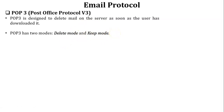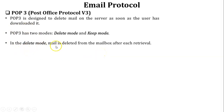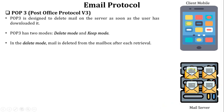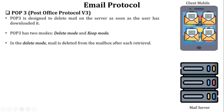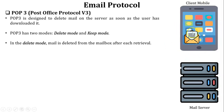In delete mode, mail is deleted from the mailbox after each retrieval. For example, assume a client wants to access mail stored on the mail server through a mobile device. The client performs the authorization phase, logs into the mail server, and downloads all mail to the client device. Since this is delete mode, all mail is deleted from the mail server after download.